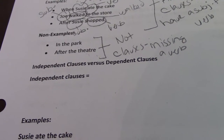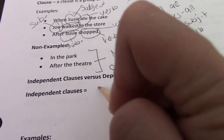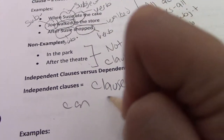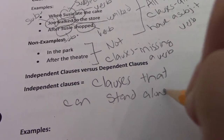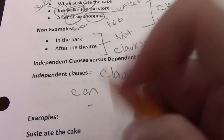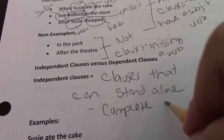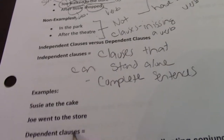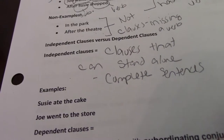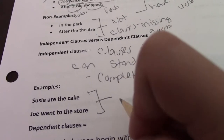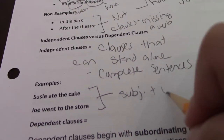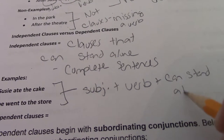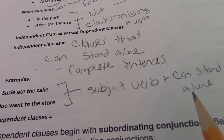So independent clauses versus dependent clauses. Independent clauses are clauses that can stand alone — they are complete sentences. Some examples are 'Susie ate the cake' and 'Joe went to the store.' Both of these have a subject and a verb, and they can stand alone.